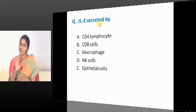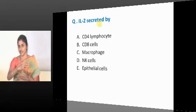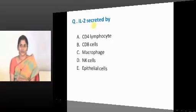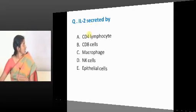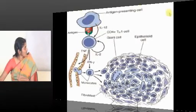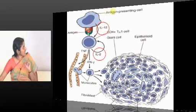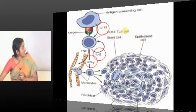IL-1 is secreted by macrophages. IL-2 is the second cytokine, secreted by T helper cells — specifically the TH-1 subset. IL-2, IL-12, and interferon gamma are cytokines of the TH-1 response. IL-12 is produced by APCs, IL-1 also by APCs, and IL-2 is secreted by the TH-1 helper T cell subset.